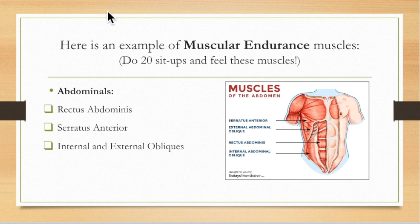This is more for my 5th graders, but 3rd and 4th graders can look at this chart too. Once you get to middle school you'll learn more anatomy in health class. These are examples of muscular endurance exercises — look where the arrows are pointed, these tend to be smaller muscles. You can pause and do 20 sit-ups or crunches and feel these muscles: the rectus abdominis, serratus anterior, and internal and external obliques.